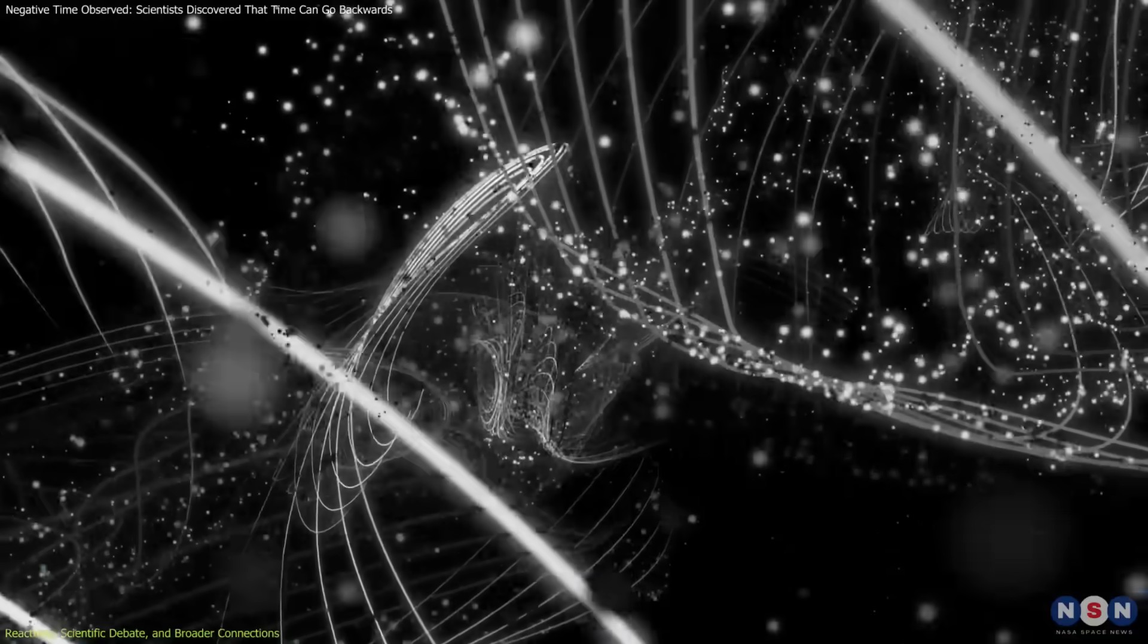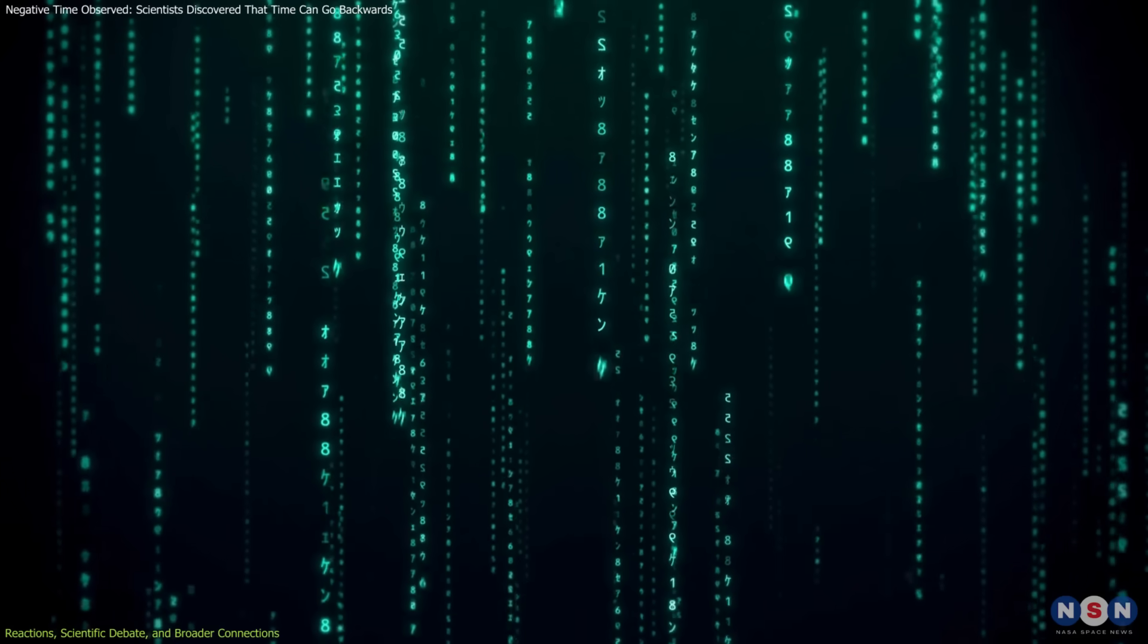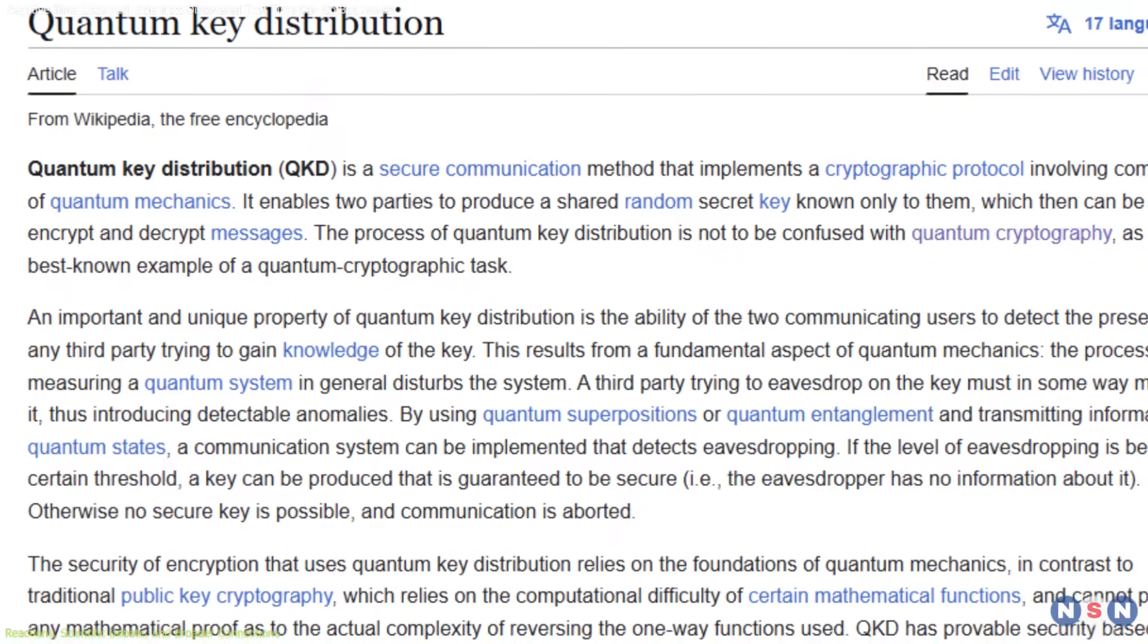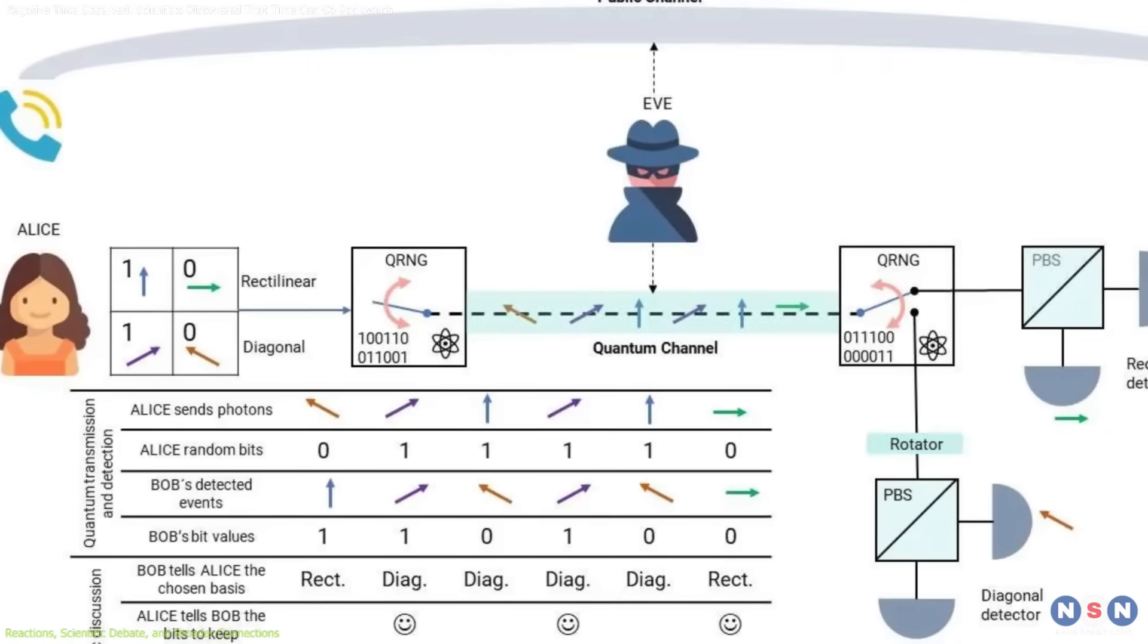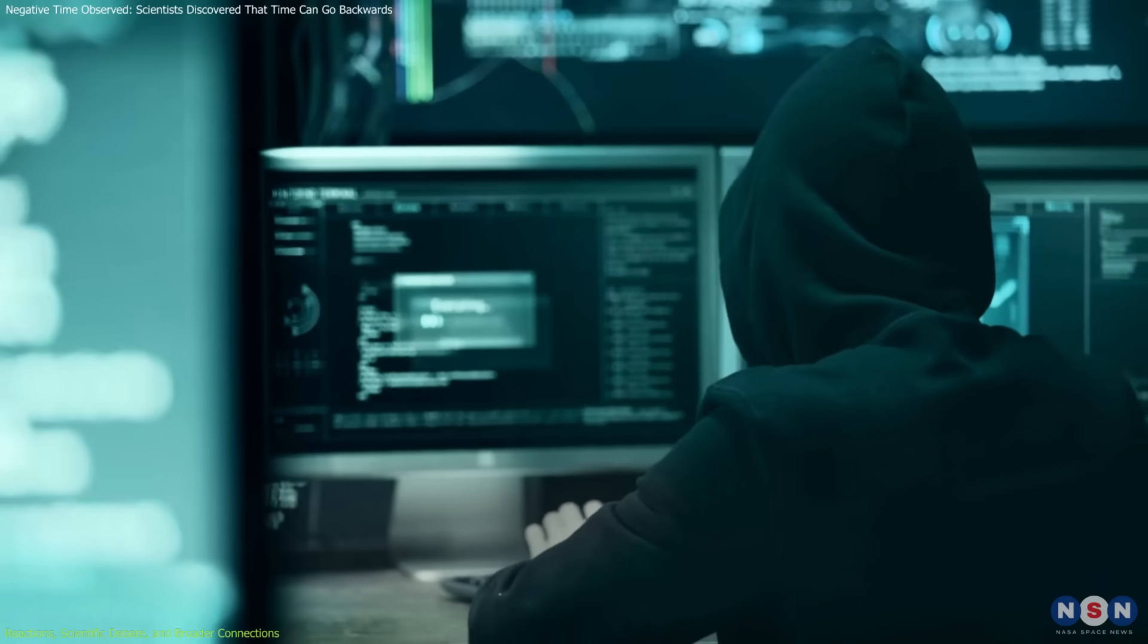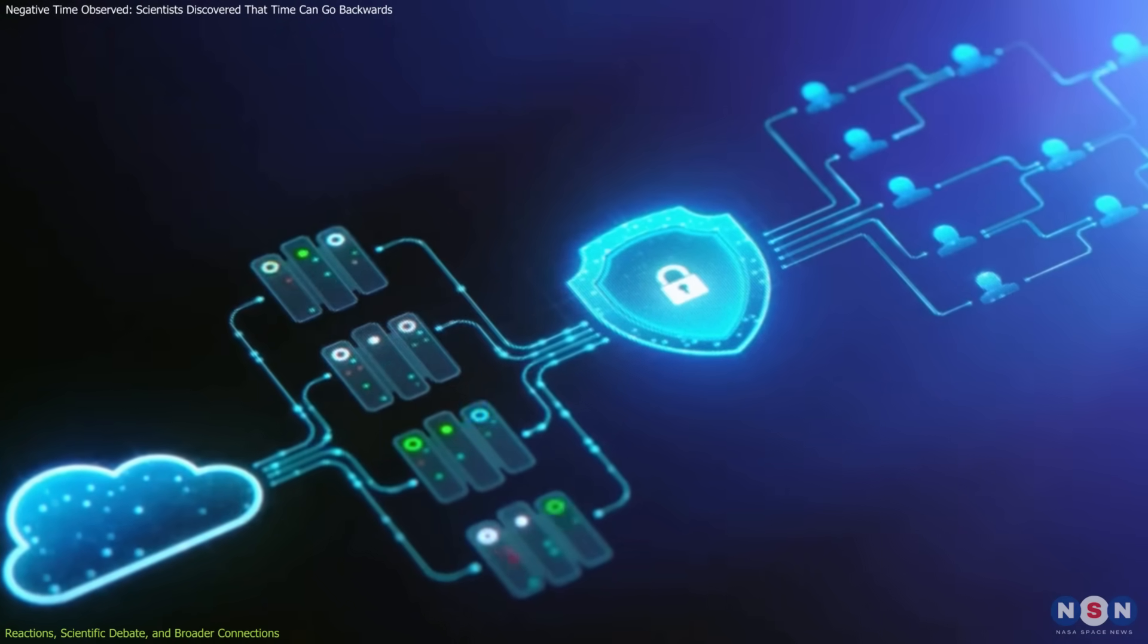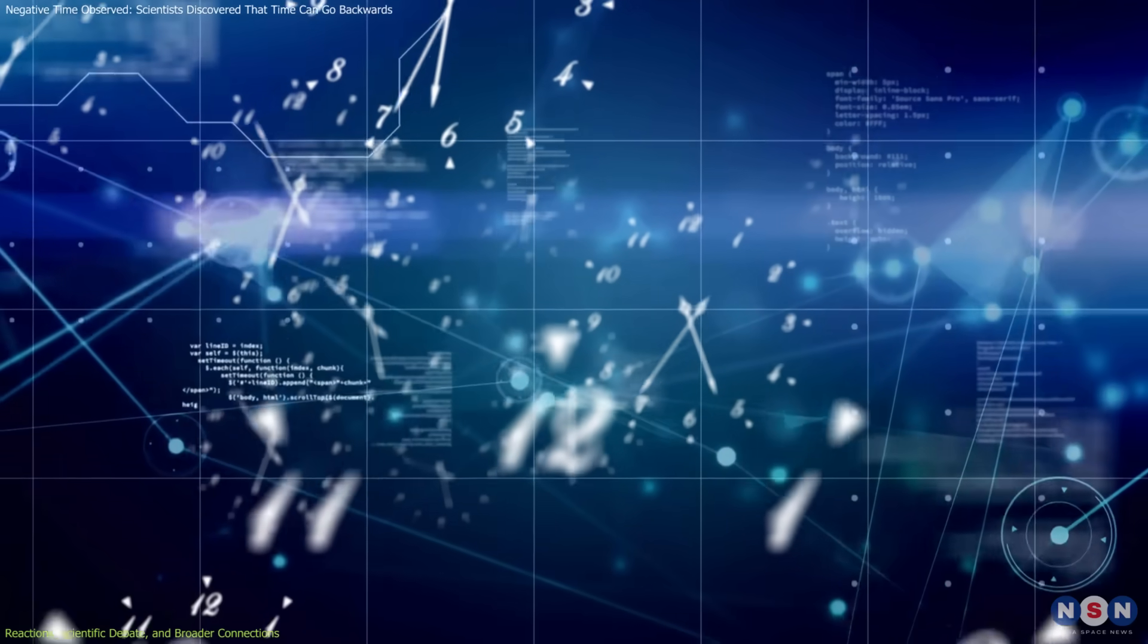Another area is quantum cryptography, which uses the principles of quantum mechanics to create unbreakable encryption methods. For example, quantum key distribution (QKD) ensures secure communication by leveraging the quantum property that any attempt to measure a quantum state disrupts it. This makes it impossible for hackers to intercept or eavesdrop without detection, laying the groundwork for the next generation of cybersecurity.